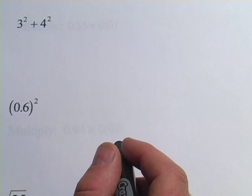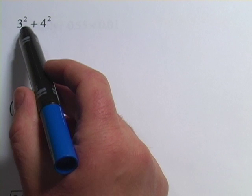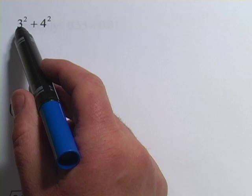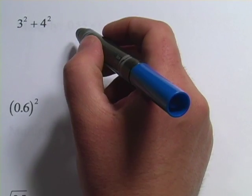These next problems are about squares and square roots. And if this is new to you, when you have a little 2 here raised up as a superscript and to the right of a number, that means it's that number squared or that number times itself.